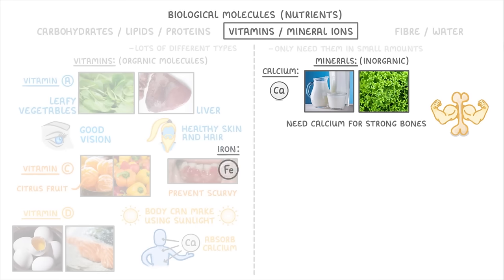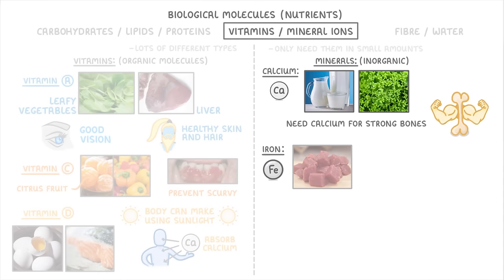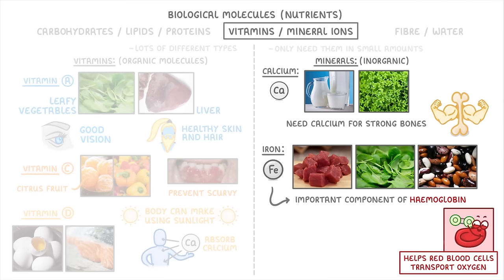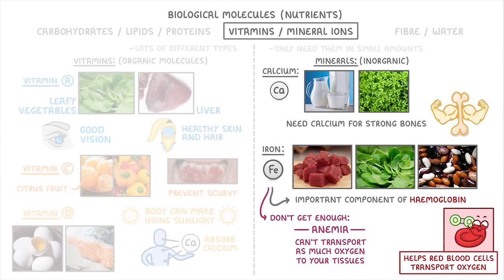Lastly, we have iron, which you get from red meat, spinach and beans. Iron is a really important component of hemoglobin, which helps your red blood cells transport oxygen around the body. So if you don't get enough iron, you can develop a condition called anemia, where you can't transport as much oxygen to your tissues anymore.